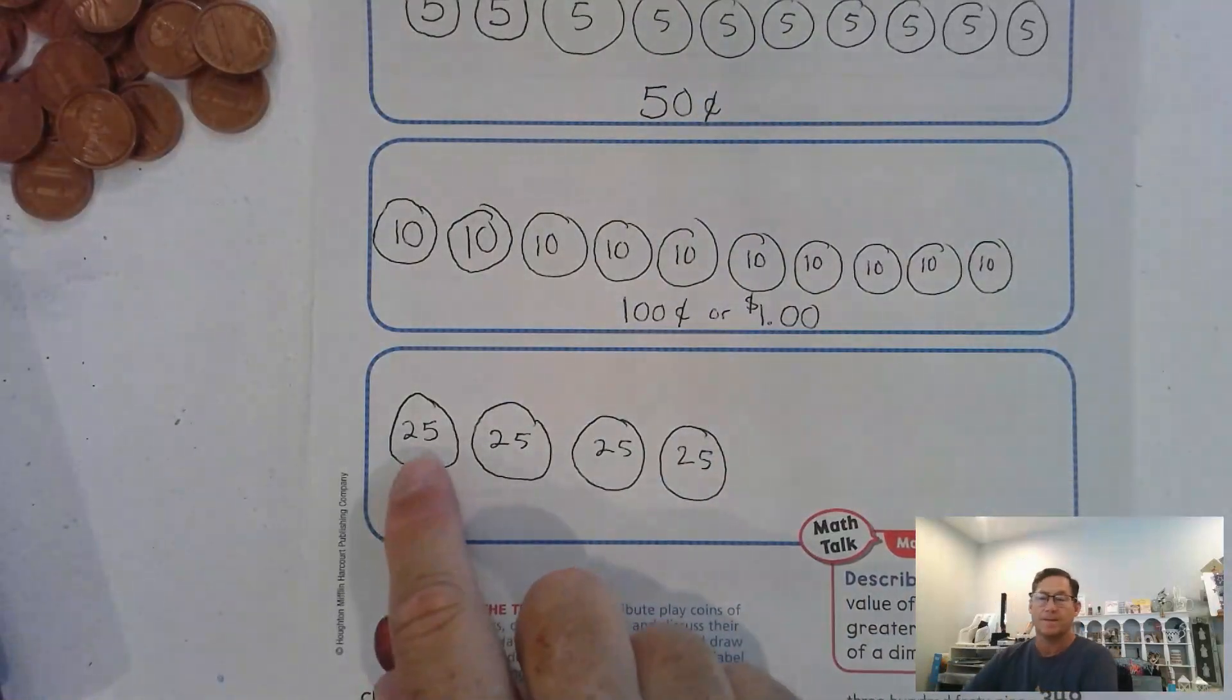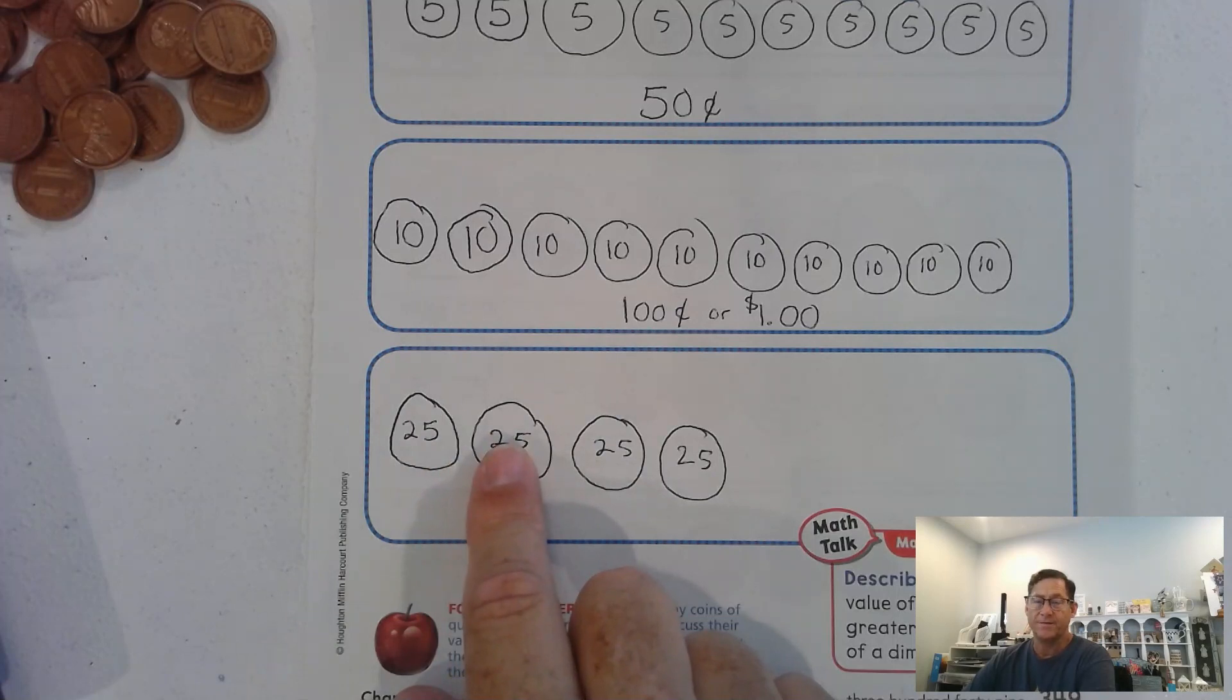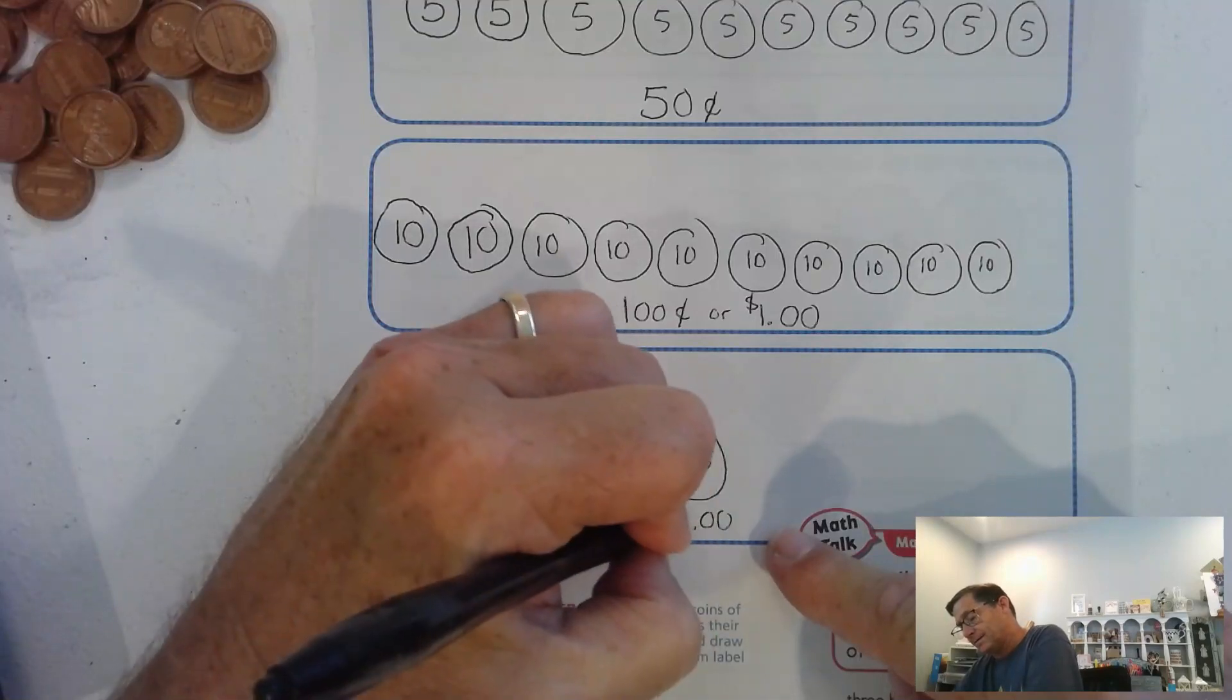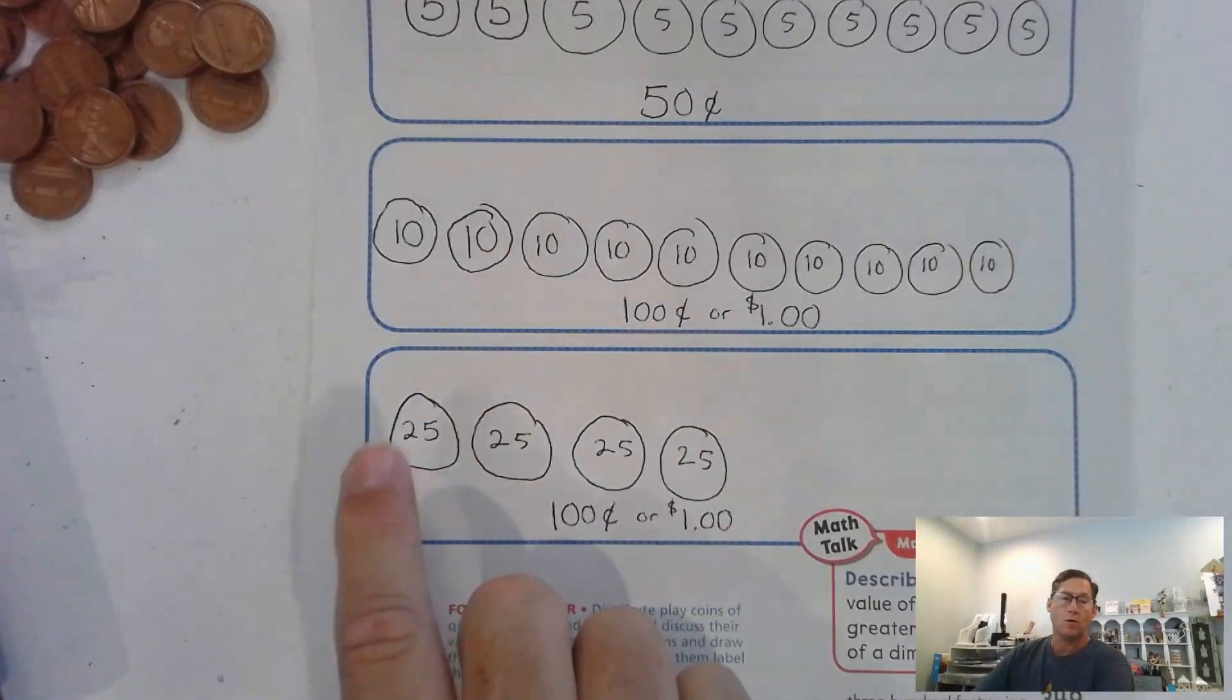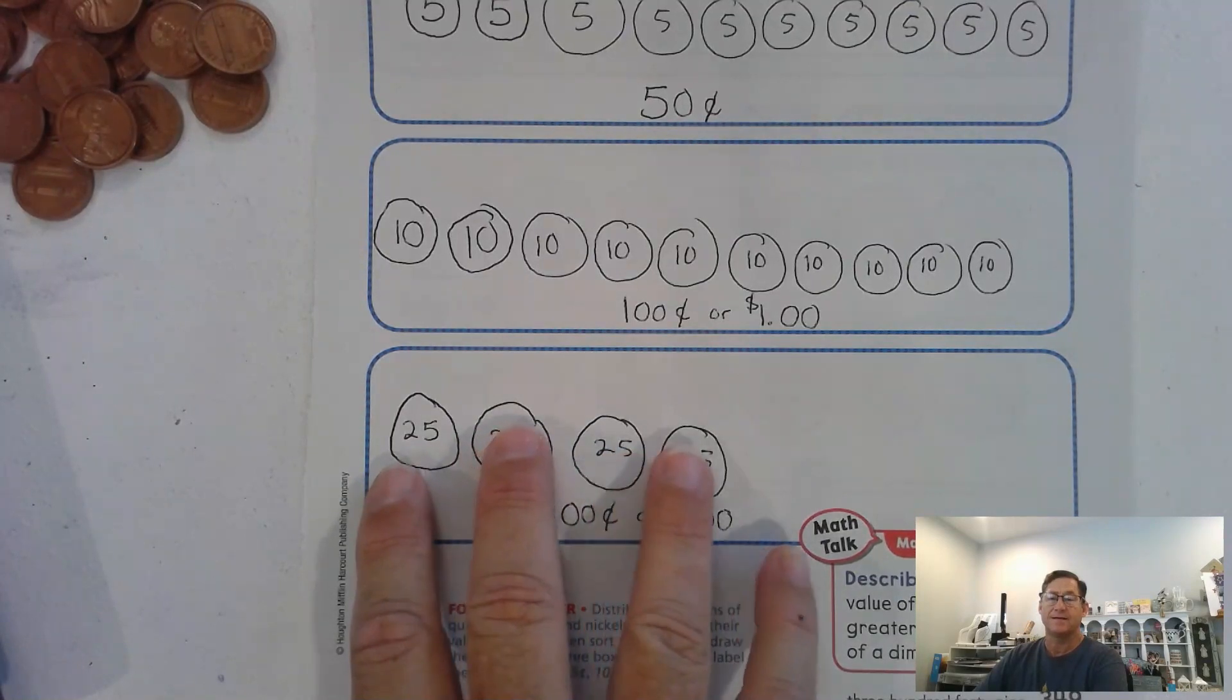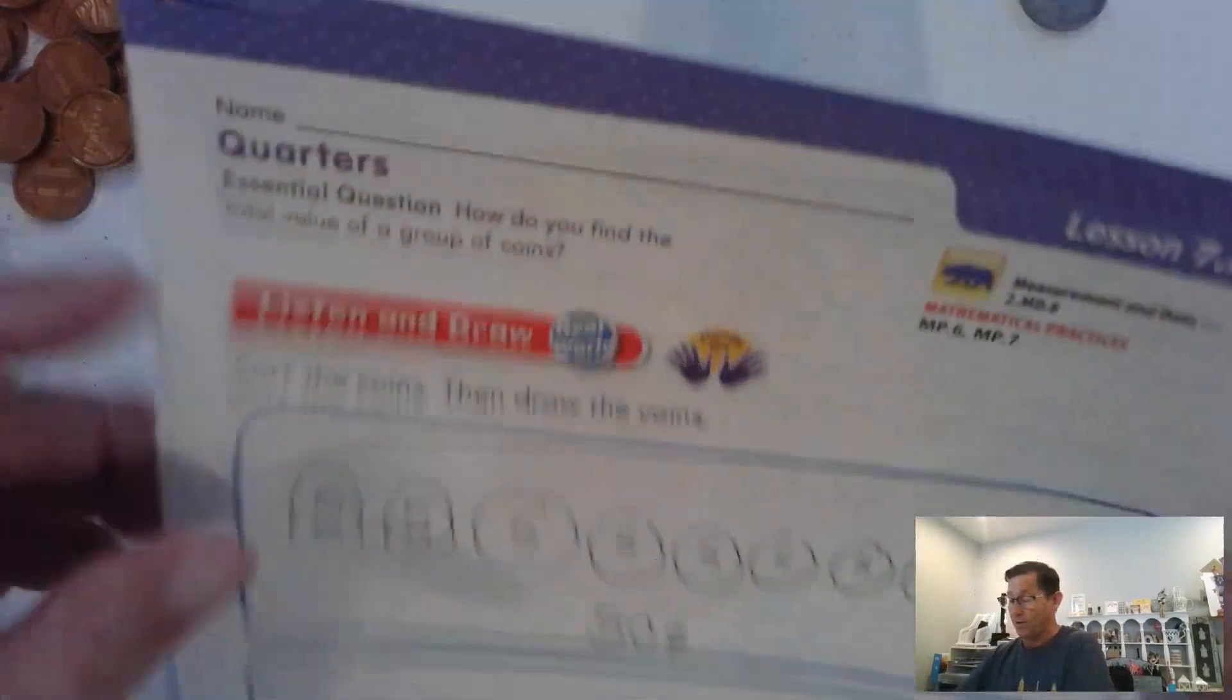We're going to need to be able to count by quarters. 25 and 25 is 50 cents, so two quarters is 50. Three quarters is 75. Four quarters is a hundred cents, or one dollar. If I give you one quarter it's 25 cents. If I give you two quarters it's 50 cents. If I give you three quarters you have 75 cents. If you have four quarters you have a dollar, or 100 cents.